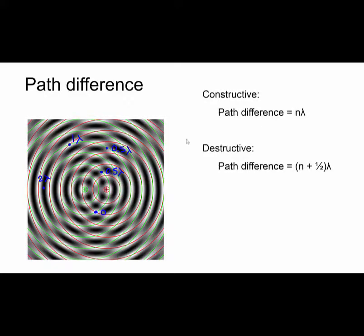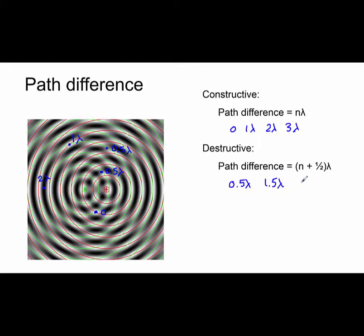We can come up with a rule: when the path difference between two waves is a whole number of wavelengths — for example, zero, one wavelength, two wavelengths, three wavelengths, and so on — you will get constructive interference. When the two waves have a path difference that is n plus a half wavelengths — for example, half a wavelength, 1.5 wavelengths, or 2.5 wavelengths — then you will get destructive interference.